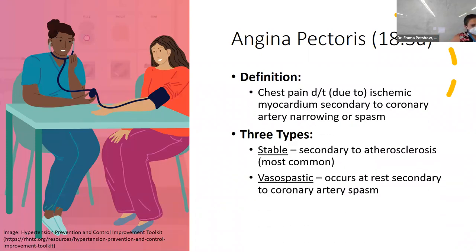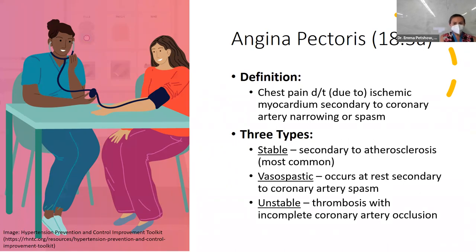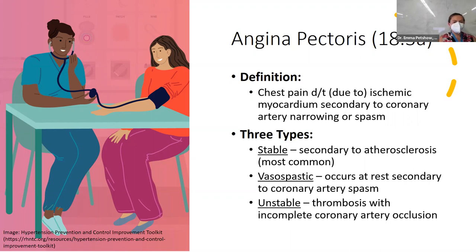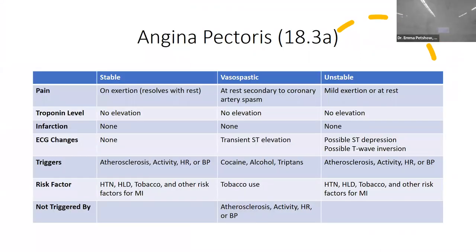Angina literally means chest pain due to ischemic myocardium, secondary to some type of coronary artery narrowing or spasm. The big thing with angina is to know the three types: stable, vasospastic — which used to be called variant — and unstable. Stable is secondary to atherosclerosis, by far the most common. Vasospastic occurs at rest, secondary to a coronary artery spasm. Unstable typically involves some type of thrombosis with incomplete coronary artery occlusion, leading to a heart attack or cardiac event.